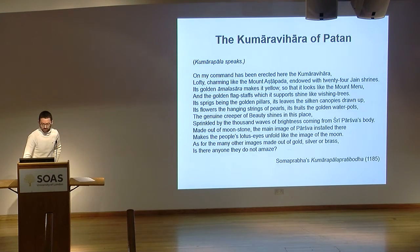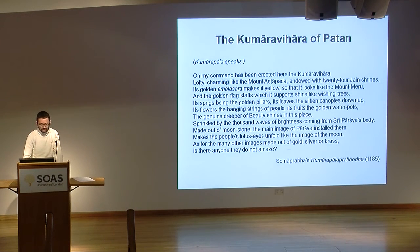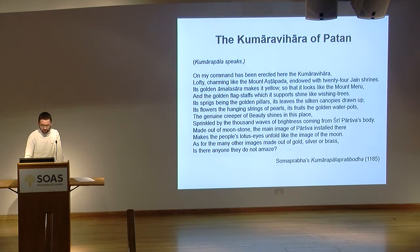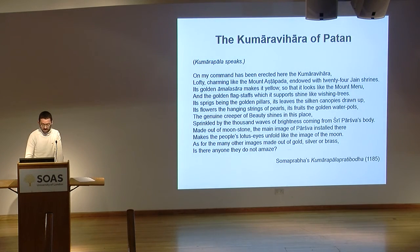'Its pricks being the golden pillars, its leaves the silken canopies drawn up, its flowers the hanging strings of pearls, its fruits the golden water pots, the genuine creeper of beauty shines in this place, sprinkled by the thousand waves of brightness coming from Sri Parshva's body. Made out of moonstone, the main image of Parshva installed there makes the people's lotus eyes unfold like the image of the moon. As for the many other images made out of gold, silver, or brass, is there anyone they do not amaze?'